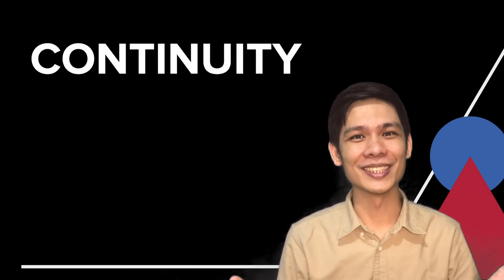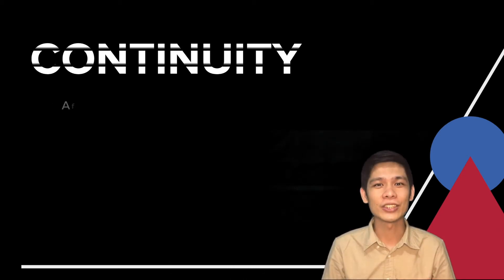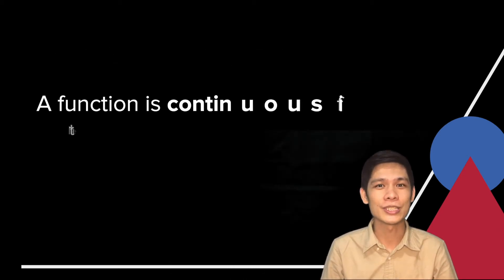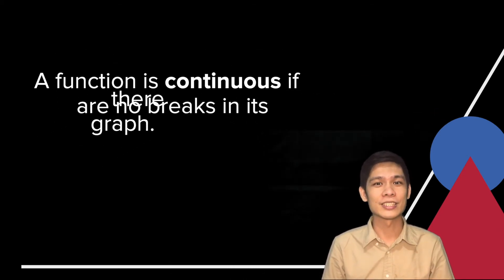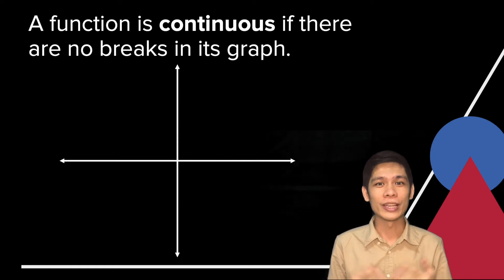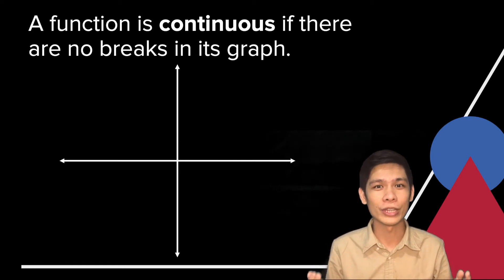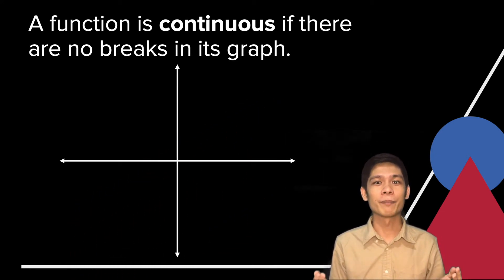So what is continuity? A function is said to be continuous if there are no gaps or breaks in its graph. Meaning, we can trace the graph continuously without lifting our pen or pencil.